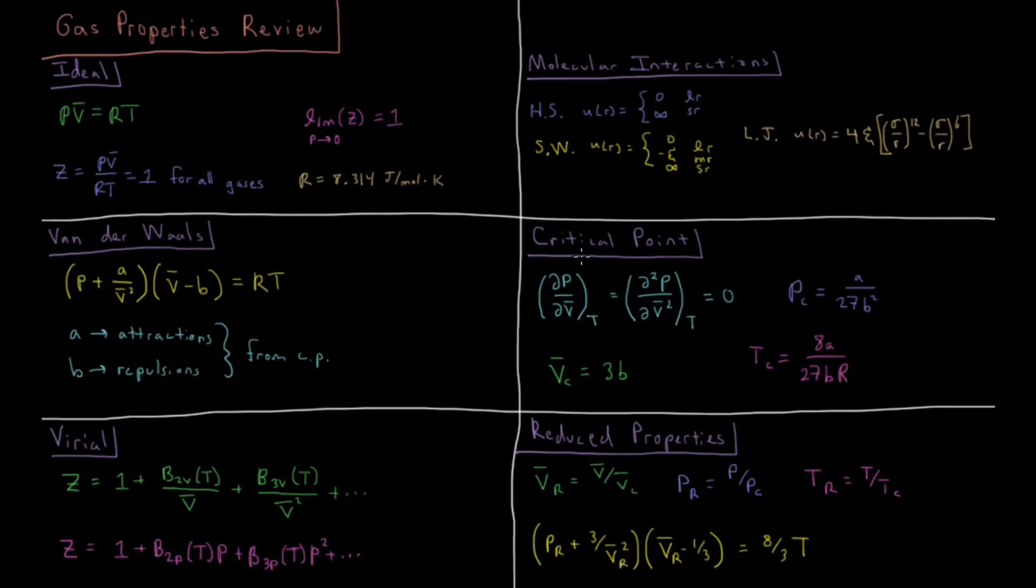The critical point is defined as the point where the derivative of the pressure with respect to molar volume, and its second derivative of pressure with respect to molar volume, is equal to 0, both of those at constant temperature.